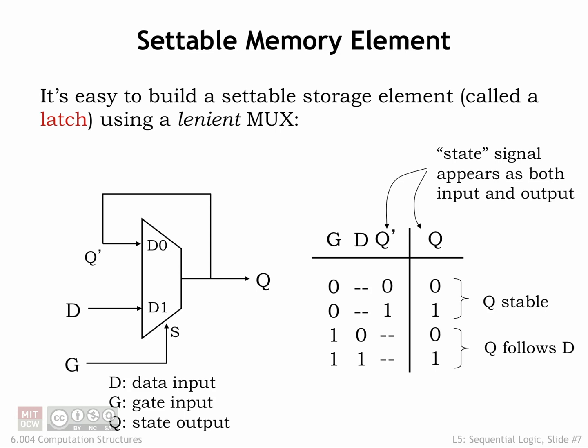We can use a 2 to 1 multiplexer to build a settable storage element. A MUX selects as its output value the value of one of its two data inputs. The output of the MUX serves as the state output of the memory component. Internally, we connect the MUX output to its D0 data input. The D1 data input becomes the data input of the memory component, and the select line becomes the memory component's load signal, here called the gate.